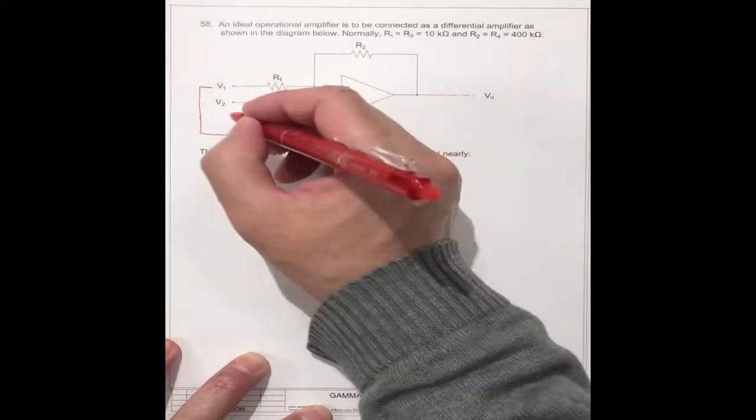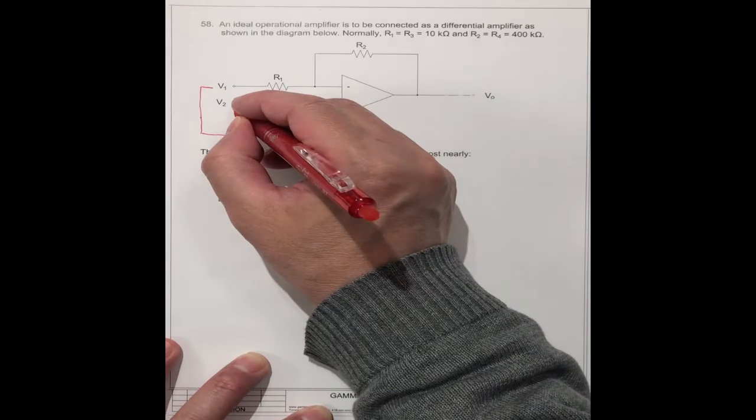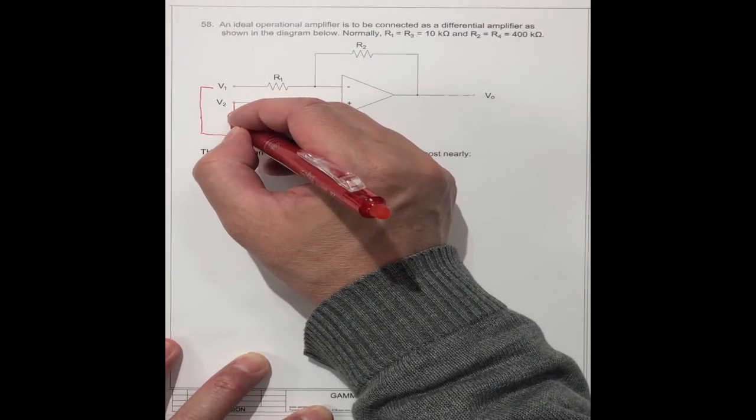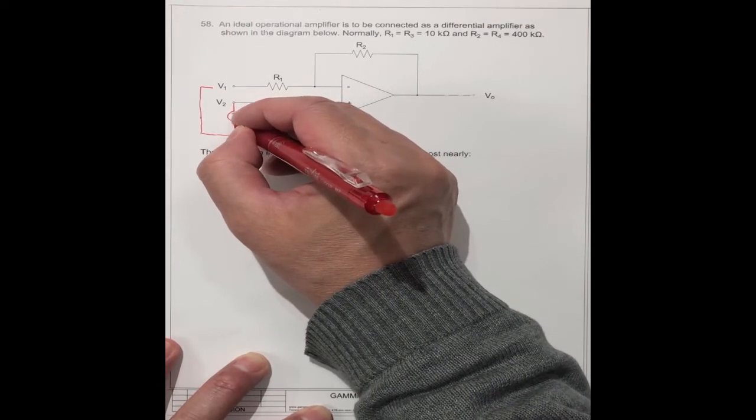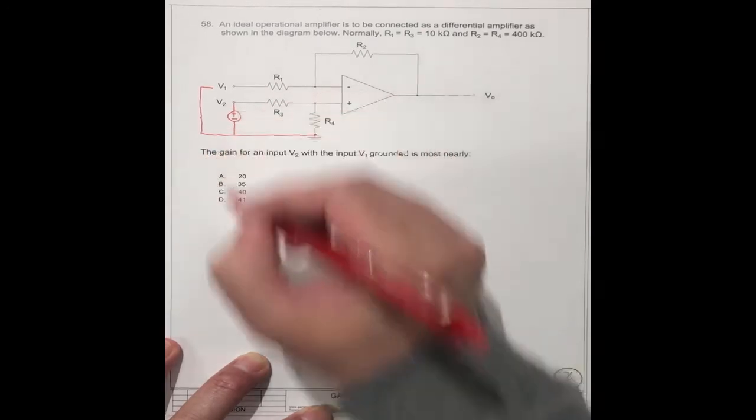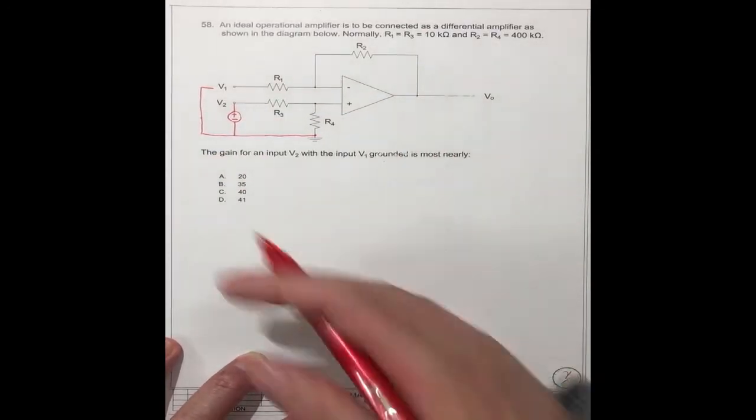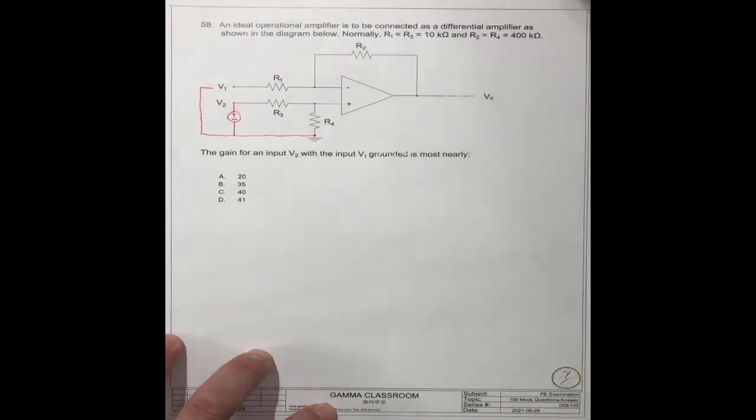And V2, we don't know. We have to get the V2 number. You can put it here. It's like this. This is the complete diagram.